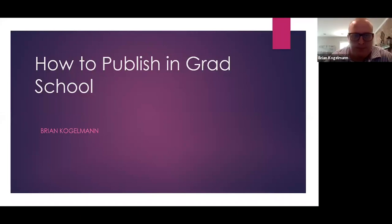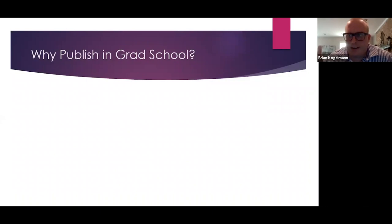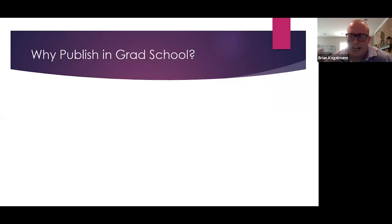Thank you very much. I have a lot of content and very little time, so I'm going to skip the intros and pleasantries and jump in right away. This is a lecture on how to publish in grad school, but an initial question you might have is: why should I publish in grad school? The point of grad school is to attain a PhD, and publishing articles in journals is not necessary to attain a PhD. So you don't need to publish to get a PhD — so why do it?